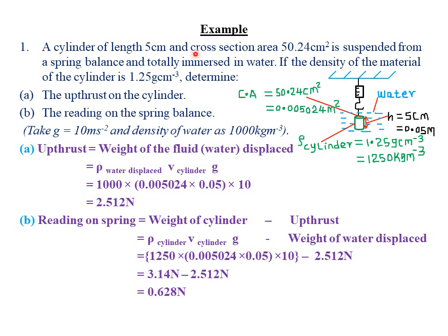We are told that it has a cross-sectional area of 50.24 cm². The SI unit for area is square meters. Therefore, I'll convert 50.24 cm² into square meters. We know that 10,000 square centimeters equals 1 square meter. So 50.24 divided by 10,000 square centimeters times 1 square meter gives us 0.005024 square meters.